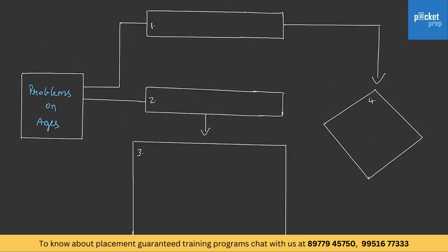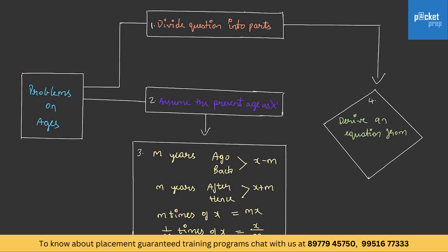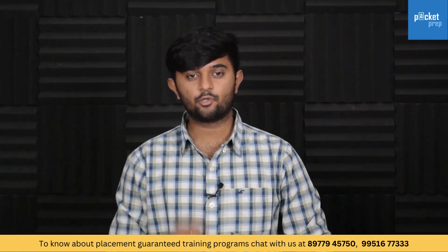Having understood the categories involved in this concept, let us solve the Type 1 problems, i.e. ratio questions. Firstly, divide the question into parts. Then assume the present age as x. As the current age is x, m years ago or m years back will be x minus m; m years after or m years hence will be x plus m; m times of x will be mx and 1 by m times of x will be x by m. Finally, we need to derive an equation from each divided part of the question to find the solution.